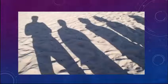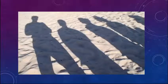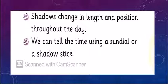Now I want you all to open your learner's book page 74 and 75. Can you see on page 75? The two main points about shadows are written there. Shadows change in length and position throughout the day, and we can tell the time using a sundial or a shadow stick.